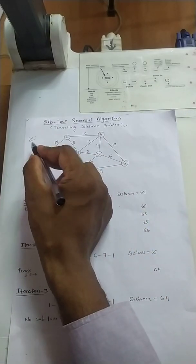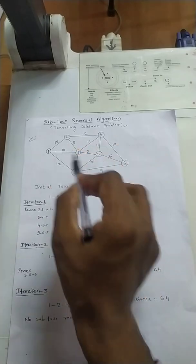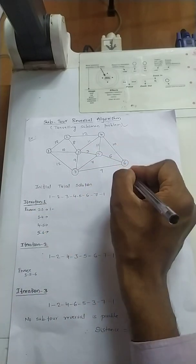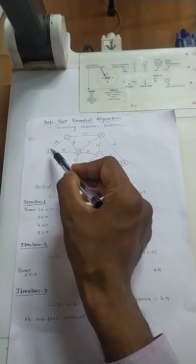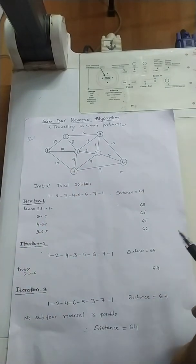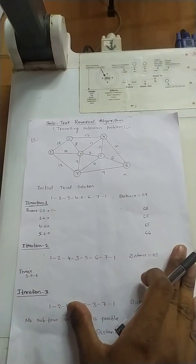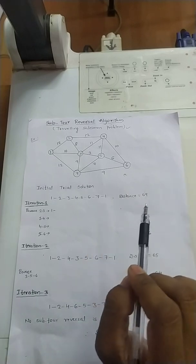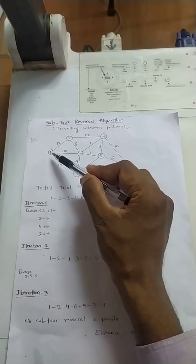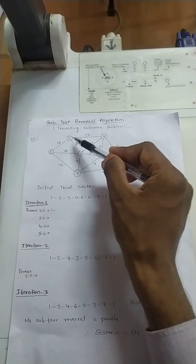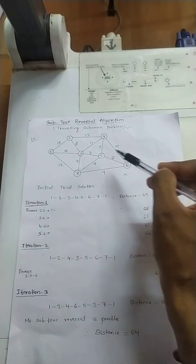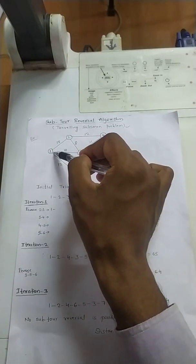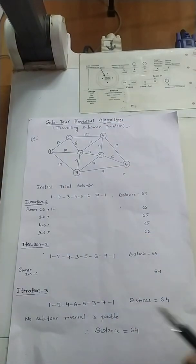In the example, we will be given with some graph as shown. There are around 7 nodes: 1, 2, 3, 4, 5, 6, 7. These nodes represent cities. The aim is to visit all the cities without repeating the path. For example, we can visit from 1, 2, 3, 4, 5, 6, 7 and again come back to 1.